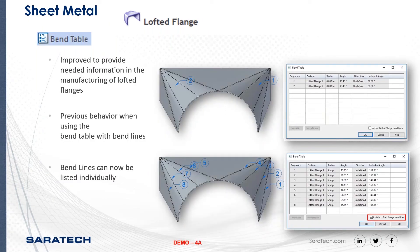Improvements to the bend tables provide needed information in the manufacture of lofted flanges. The previous behavior when using the bend table with bend lines is shown in the first example. Now bend lines can be listed individually — you can see the different vertices one through eight listed for our lofted flanges.